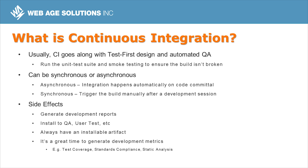Continuous integration goes hand-in-hand with test-driven development and automated quality assurance. Basically, the CI system is going to check out a fresh copy of the source from version control, build it, and then run the unit test suite and some basic smoke testing. We can either do that automatically, triggered when code gets checked into version control, or manually, when developers decide they're finished a set of changes. Then, assuming everything passes, the CI system can run more detailed testing, and then even install the build on our QA or user testing system.